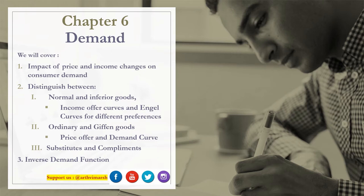This chapter will be dealing with three key themes. First, we will be talking about the impact of price and income changes on consumer demand. Then we will be distinguishing between different types of goods: normal and inferior goods, ordinary and Giffen goods, substitutes and complements. And finally we will be talking about the inverse demand function.